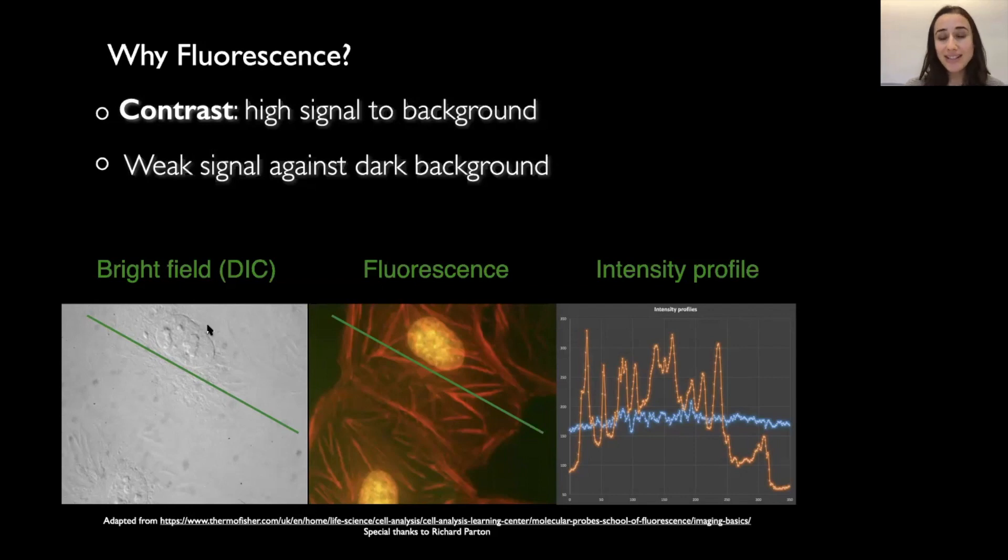And the fluorescence is a relatively weak signal, and it's much easier to see a weak signal in a dark background than in a very bright background. So for example, if we compare the same sample in bright field image and fluorescence, we can see that we get much better contrast under fluorescence.